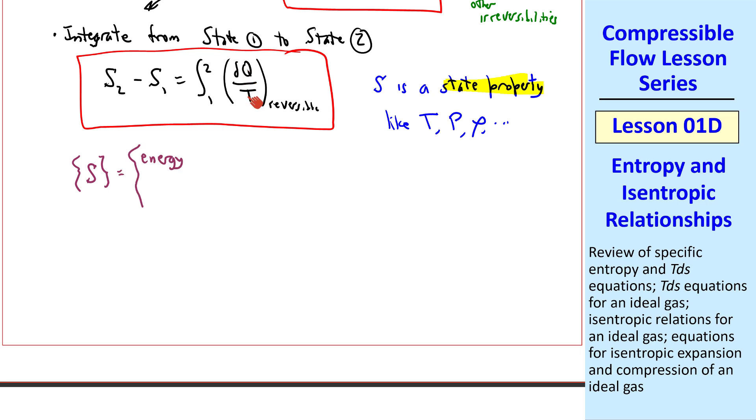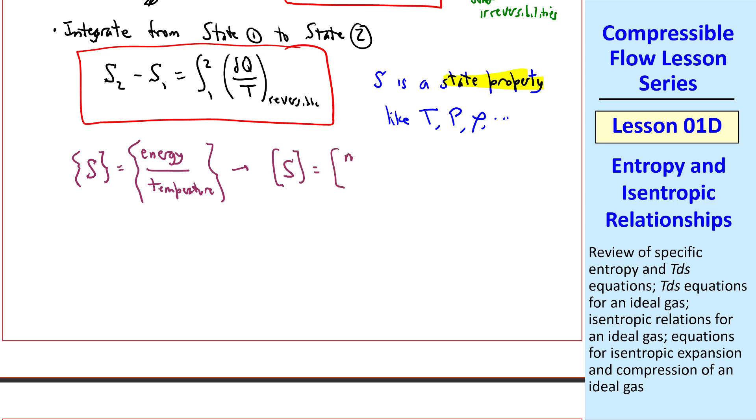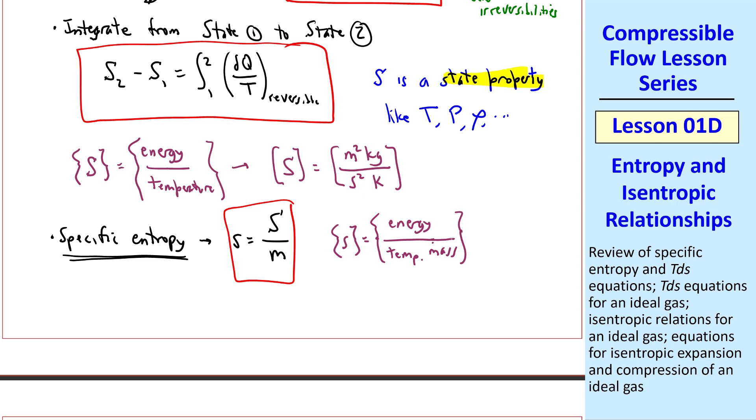The dimensions of S are those of energy divided by temperature, and the units are typically meters squared kilogram per second squared K. We can also define specific entropy, lowercase s, by dividing entropy by mass. Removing mass from these, the dimensions of lowercase s, specific entropy, are energy per temperature per mass, and the units are meter squared per second squared K.